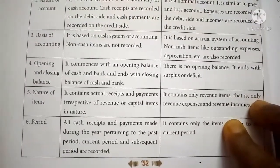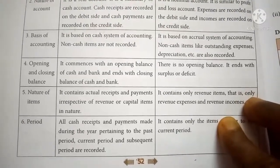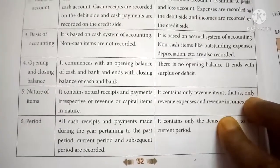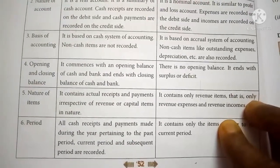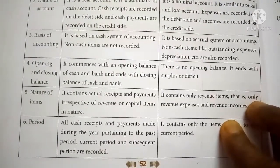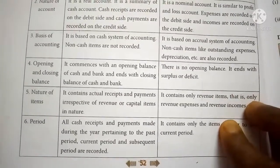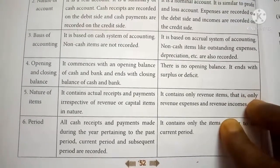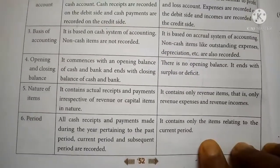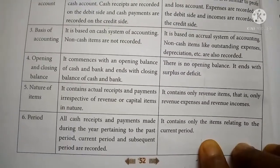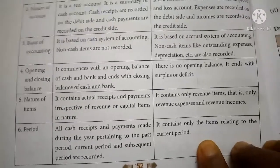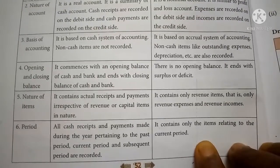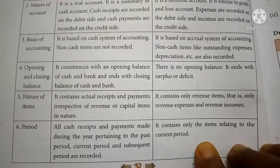Period of accounting: The Receipts and Payments account records all cash receipts and payments made during the year, pertaining to past, current, or subsequent periods. In the Income and Expenditure account, only current-year amounts are recorded — current-year income and current-year expenses. Previous-year and next-year items are not taken into account.